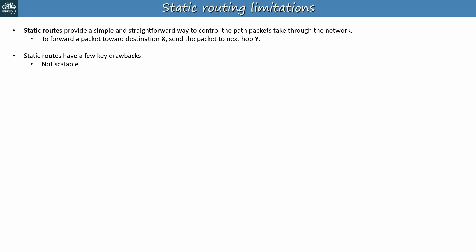But there are a few key drawbacks that make static routes insufficient on their own in most cases. First, they simply aren't scalable — they require manual configuration. And especially in medium and large networks, configuring static routes and backup floating static routes to each destination is impractical. And they are prone to human error: anytime you need a human to make a whole lot of configurations on a whole lot of devices, the chance of error increases.